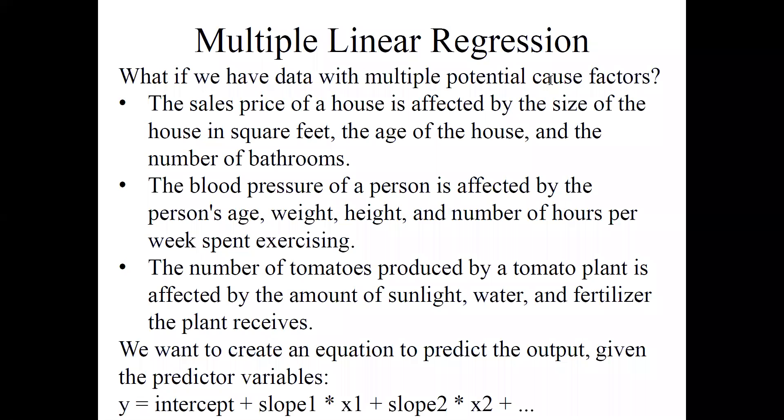Multiple linear regression is what happens when we have multiple potential cause factors and we want to put them together into one equation. For example, suppose the sales price of a house is affected by several things: the size of the house in square feet, the age of the house, the number of bathrooms, that sort of stuff.